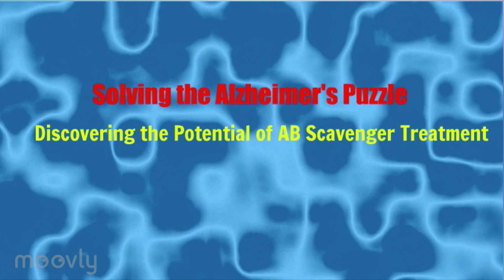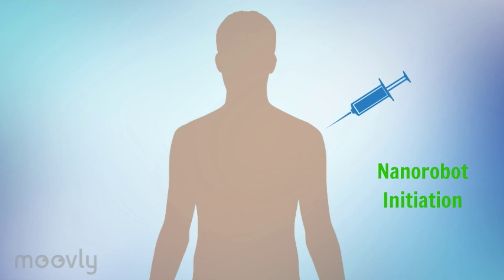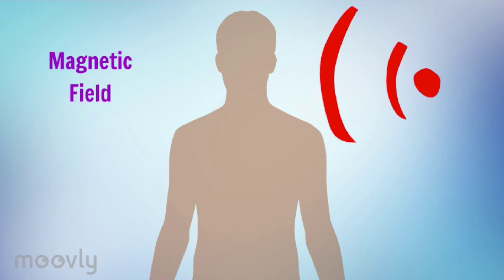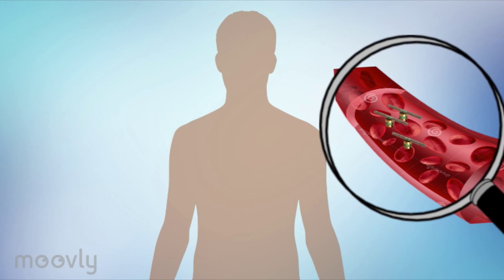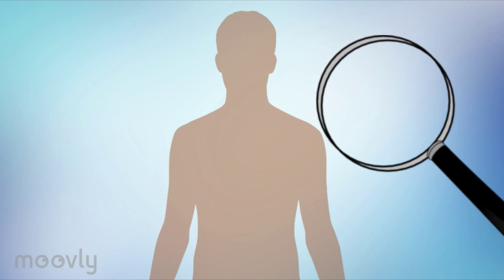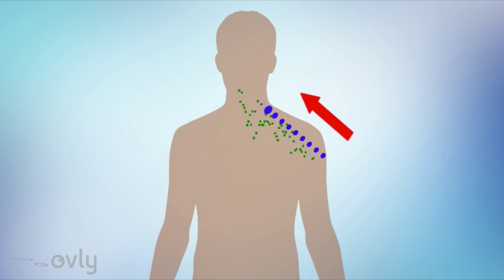A-B treatment is a game-changer for future Alzheimer's treatment. Scavengers in an aqueous solution are injected into the bloodstream. These bots, as guided by a magnetic field, travel through the subclavian artery to the cerebral cortex, where A-B plaques are known to originate.